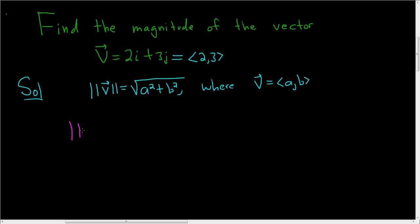So the magnitude of v is the square root, and in this case, a is 2 and b is 3. So 2 squared plus 3 squared.